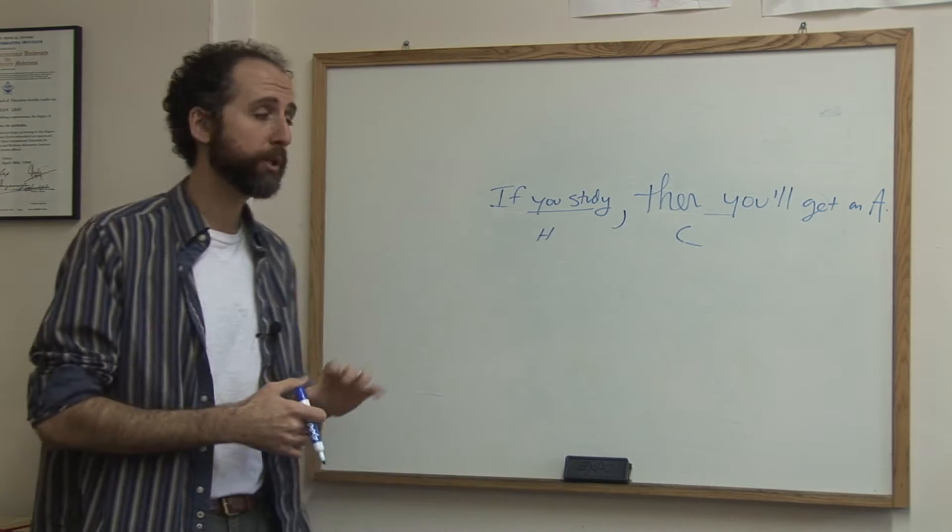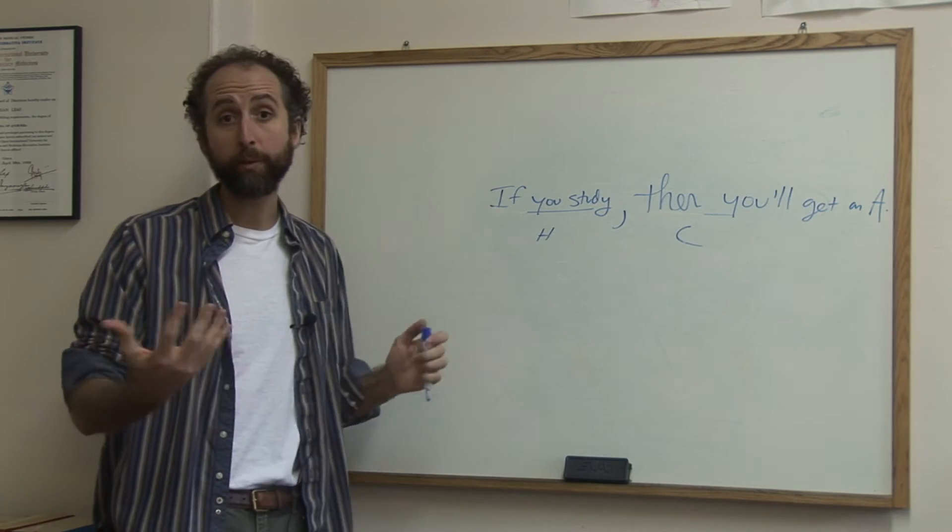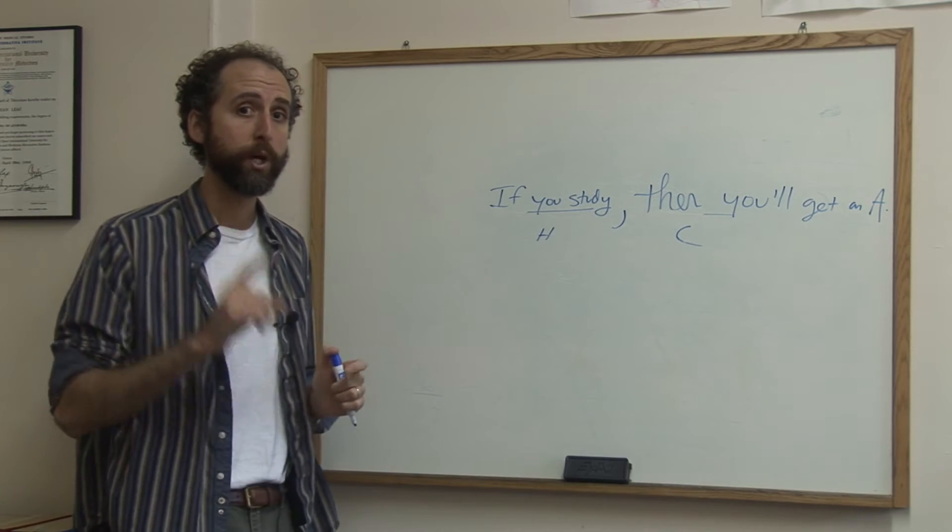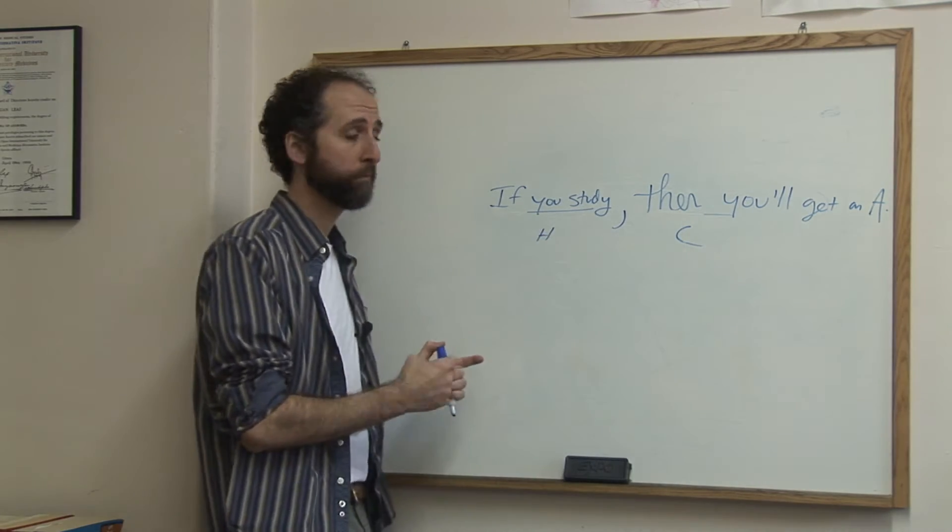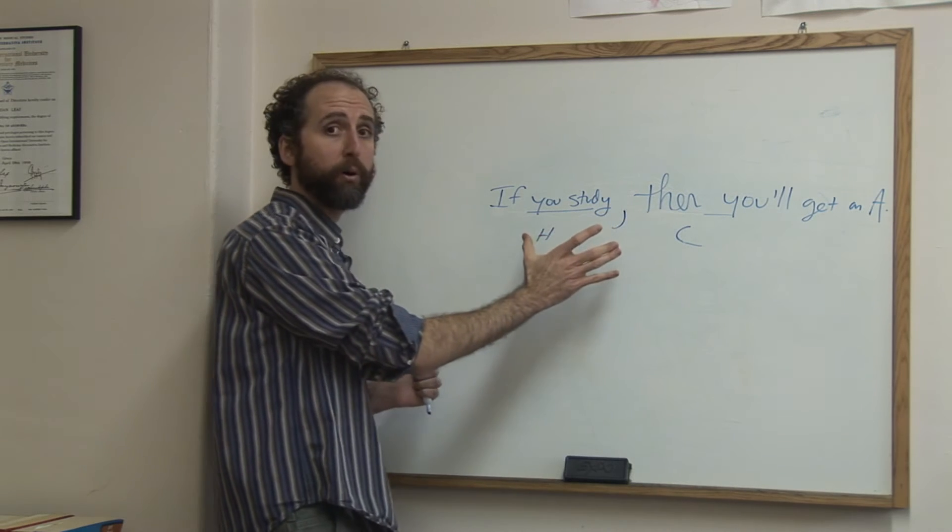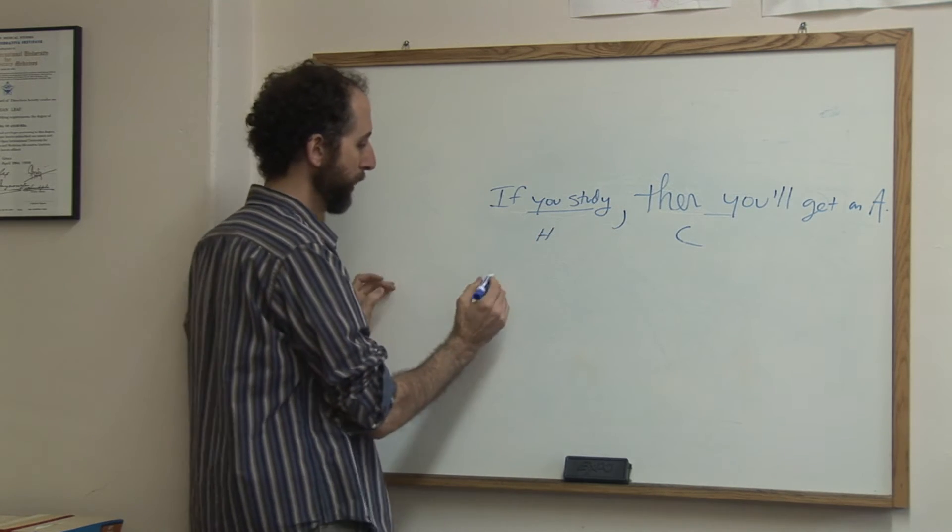In geometry class, you're going to be asked to switch these around, to play with them. One thing you might be asked to do is to do the converse. The converse is just when you swap the hypothesis and conclusion. That's why the if and the then aren't really part of them. They're not getting swapped. So we're going to keep our if.